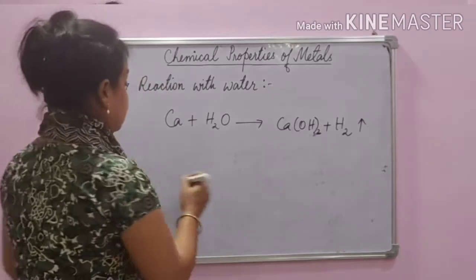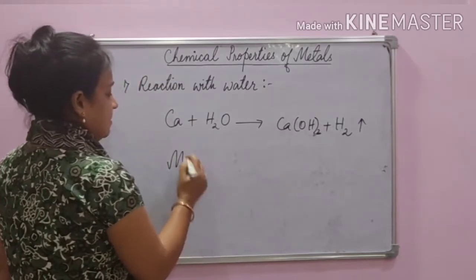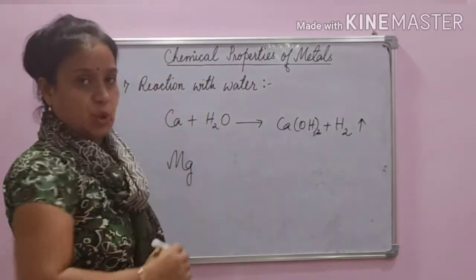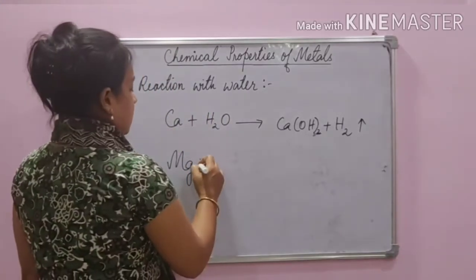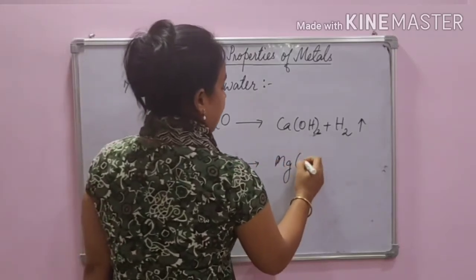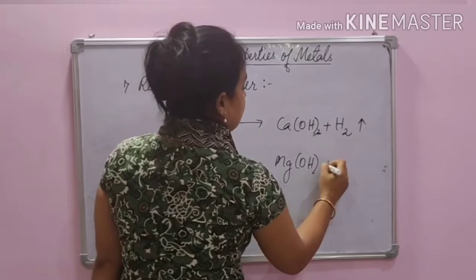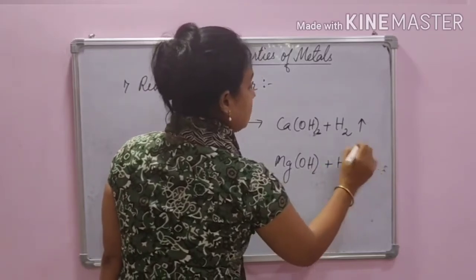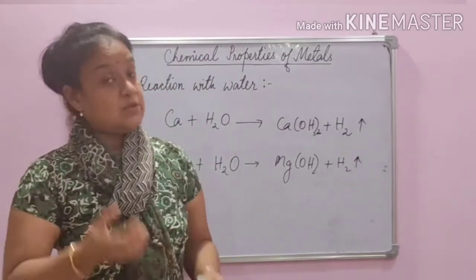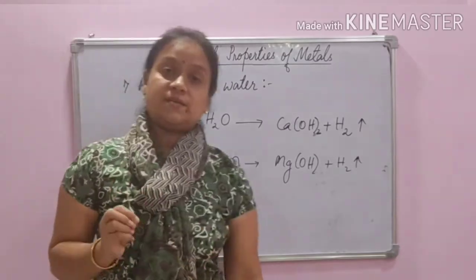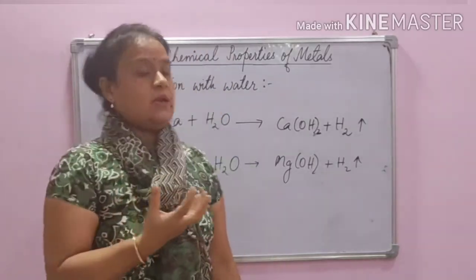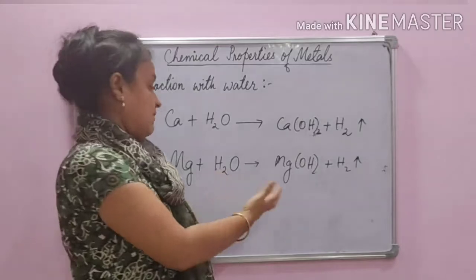Magnesium is below calcium in the reactivity series, so it does not react with cold water. It can react with water at room temperature, forming magnesium hydroxide and hydrogen gas. The hydrogen gas sticks to the surface of magnesium, causing it to float. This is a very common exam question — why calcium or magnesium starts floating when it reacts with water.